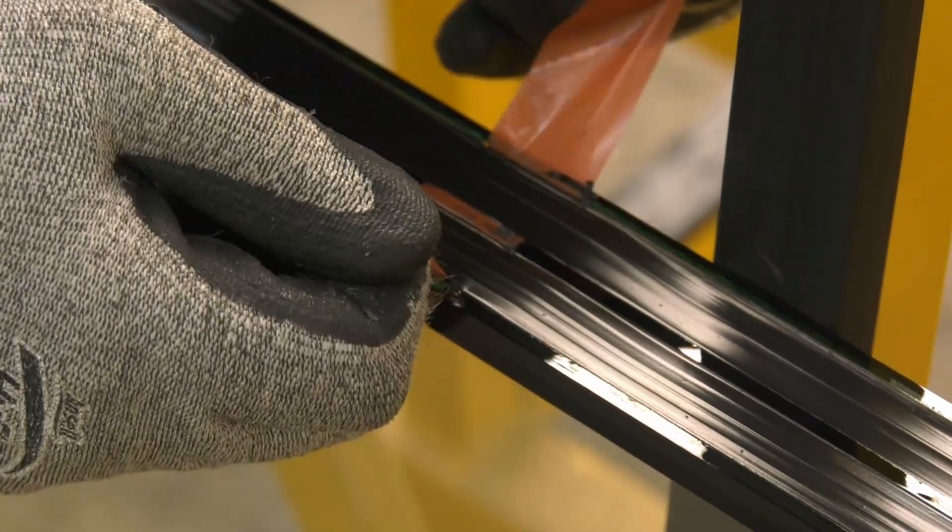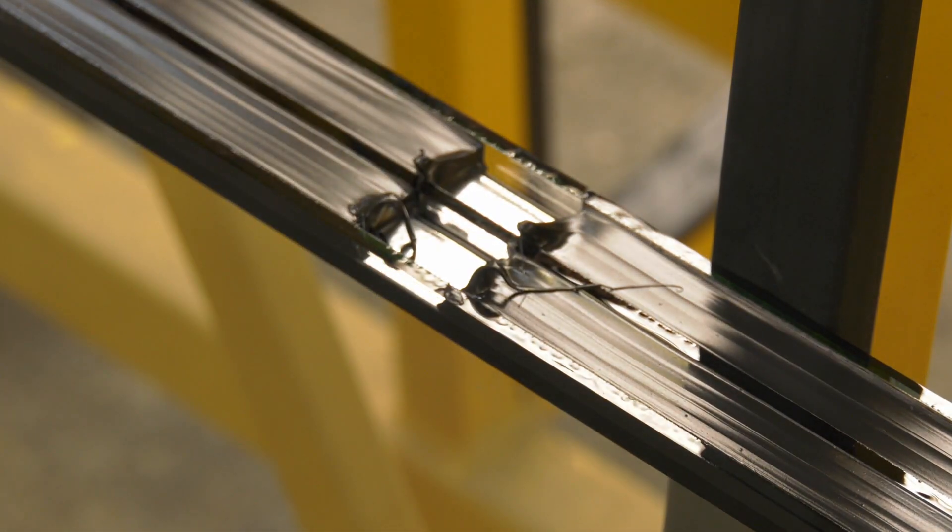The adhesive strip with the fresh sealant is removed and the edges are smoothed. Now the sealant can cure.